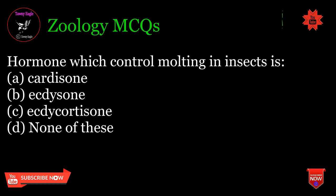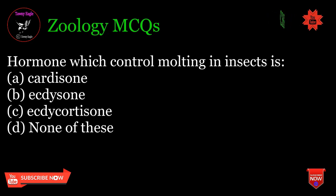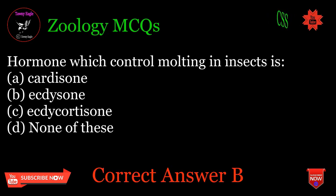Hormone which controls molting in insects is: A. Cortisone, B. Ecdysone, C. Ectocortisone, D. None of these. Correct answer: B.